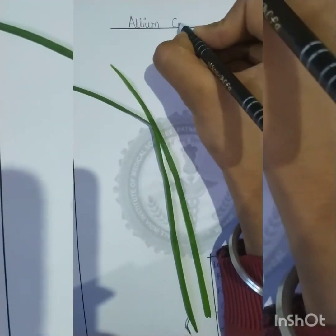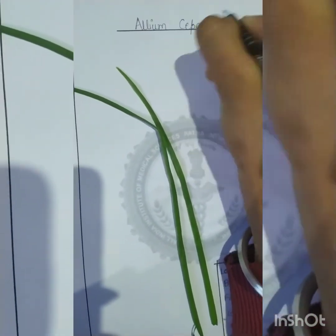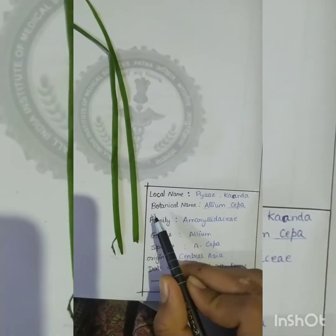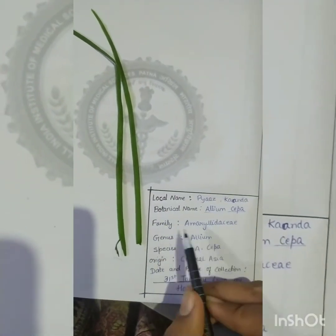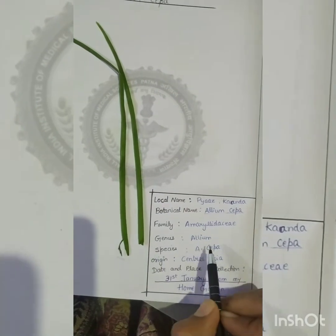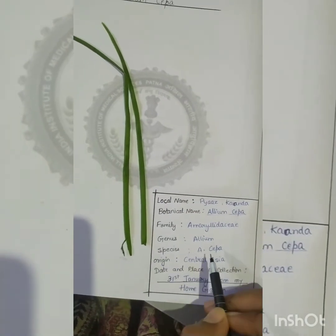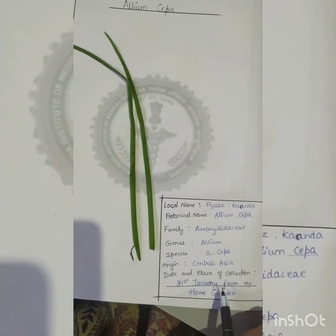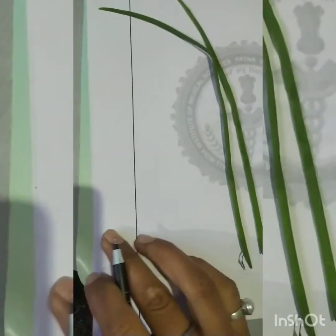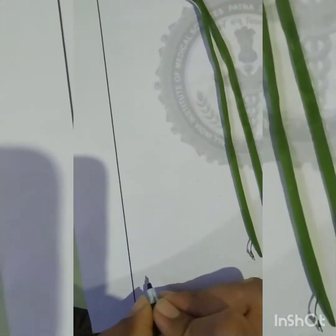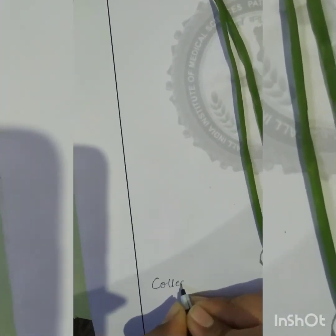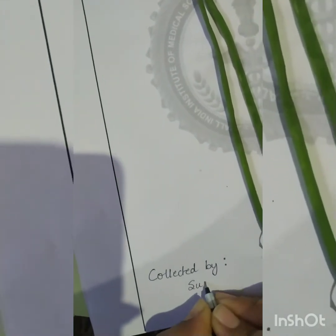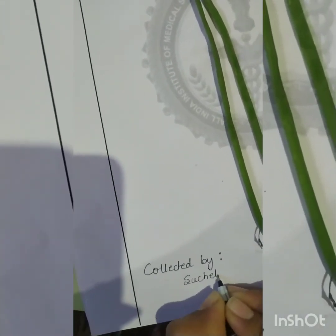The next one is onion, scientifically named Allium cepa. Its local name is pyaj or onion. It belongs to the family Amaryllidaceae, genus Allium, species A. cepa, and origin is Central Asia. Don't forget to write the name of the collector — you can write it in any available space.